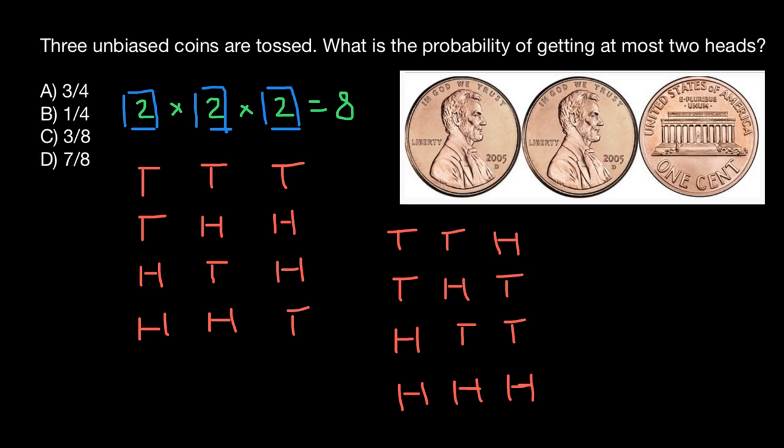So now we have listed all eight variants: with all three tails, with two heads and one tail, with two tails and one head, and all three heads. Now let's pay attention to our question. What is the probability of getting at most two heads? This means that we can exclude this variant because it doesn't meet requirements of our problem, because here we have three heads. But we can only choose between at most two heads.